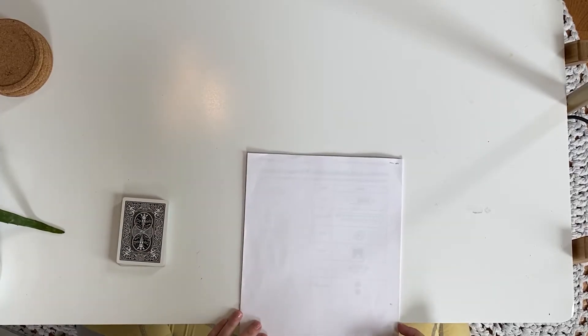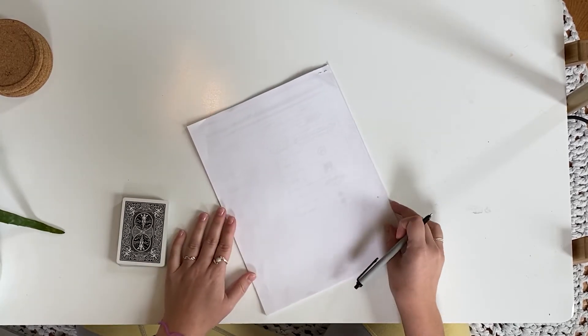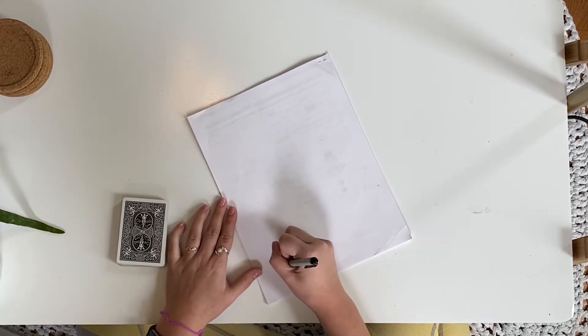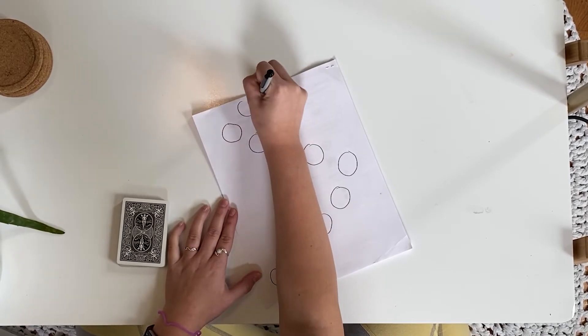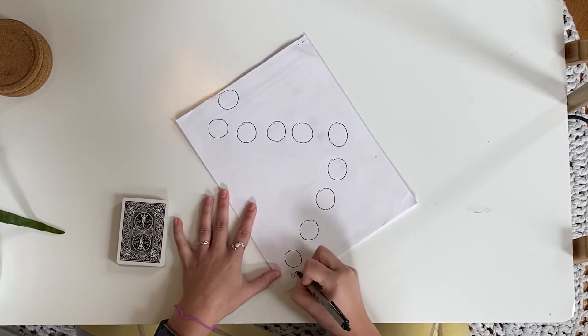On a blank piece of paper, players will create their own path or staircase with 10 spaces. They will label Start and Finish on this path.